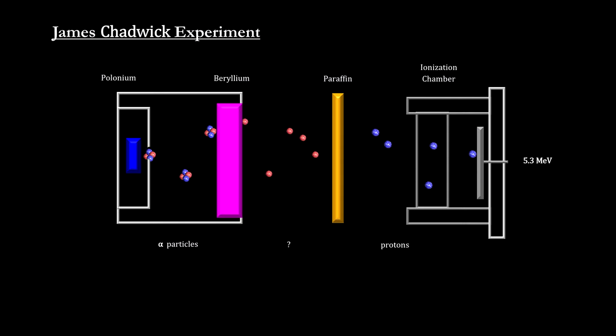The energy acquired by those protons was measured and found to be more than a gamma ray could possibly impart to a proton. In fact, the protons ejected from the paraffin on the right was equal to the energy of the radiation coming out of the beryllium on the left.